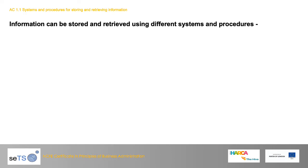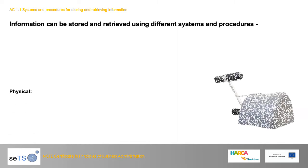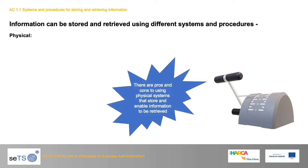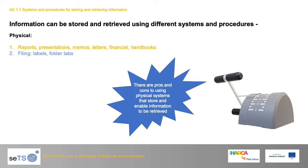Information can be stored and retrieved using different systems and procedures. There are physical systems with pros and cons. Physical information such as reports, presentations, memos, letters, financial documents, and handbooks can be stored using filing with labels and folder tabs. They are easy to access — you can walk over to the filing cabinet, open the drawer, and flick through to take your file out.